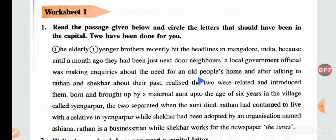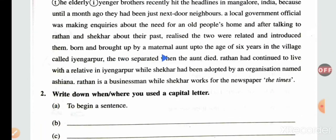A local government official was making inquiries about the need for an old people's home, and after talking to Ratan and Shekhar — Ratan and Shekhar will be capital 'R' and capital 'S' — about their past, he realized the two were related and had been introduced. They were brought up by a maternal aunt up to the age of six years in a village called Younger Poor — 'I' will be capital. The two separated when the aunt died. Ratan, capital 'R', had continued to live with a relative in Younger Poor, while Shekhar, capital 'S', had been adopted by an organization named Asiana — 'A' will be capital.